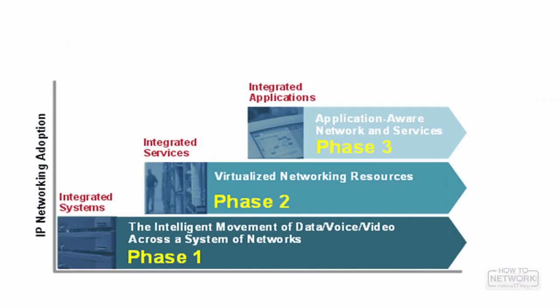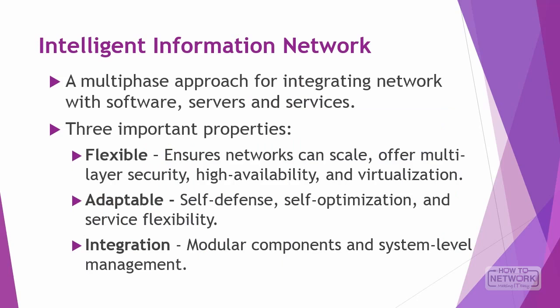The IIN is broken up into three individual phases. Phase one is the Integrated Systems phase, which involves the convergence of voice, data, and video into a single transport network, facilitated by platforms such as Cisco ISR routers. Phase two is the Integrated Services phase, which merges common elements such as storage and data center server capacity; virtualization technologies allow for integration of servers, storage, and network devices. Phase three is the Integrated Applications phase, the ultimate goal of IIN, in that it allows the network to become application aware.